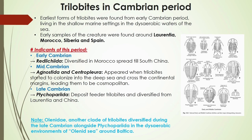In the late Cambrian, Ptychopariida was abundant in Laurentia and China, alongside Olenida — another clade of trilobite in the Olenid Sea around the Baltica paleocontinent, which is equivalent to present-day Eurasia.